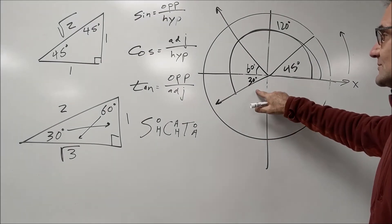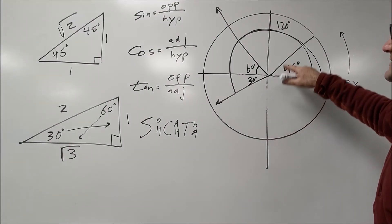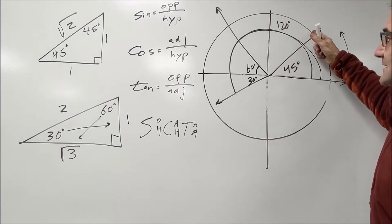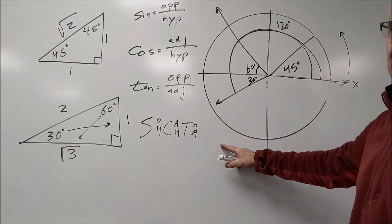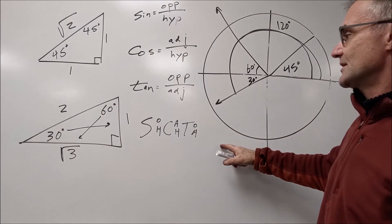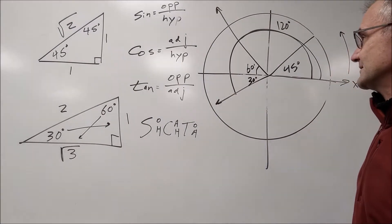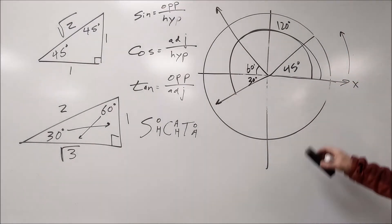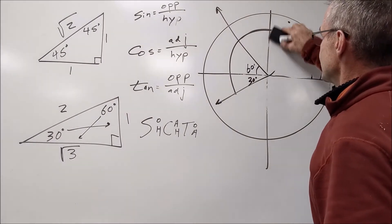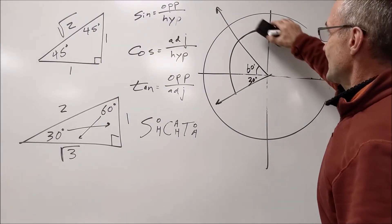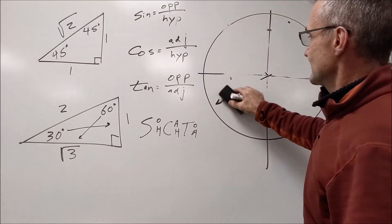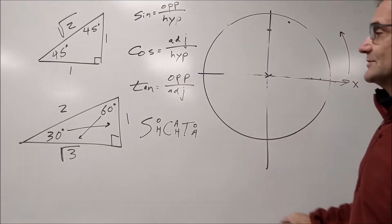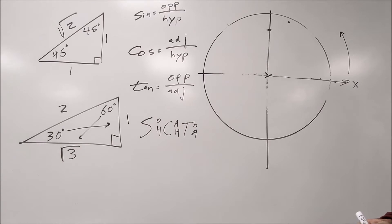So you could do exact values in both degrees and radians. You could do either exact or approximate. Exact means without a calculator, so it'll be a known triangle. Approximate means with a calculator. Let me just do one quick exact value problem in degrees before I talk more about radians. What is the exact value of the tangent of 135 degrees?